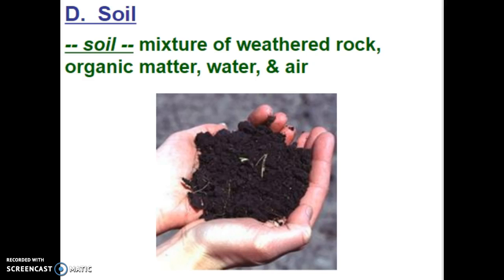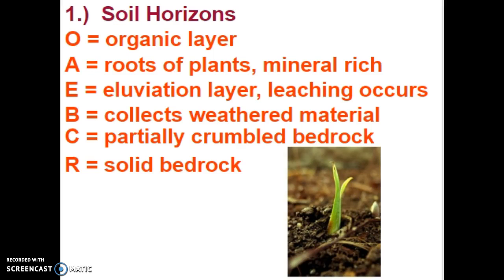Basically, we have mechanical and chemical weathering so we can have soil. Soil is a mixture of weathered rock, organic matter, water, and air. We can take a look at the different soil horizons. These layers can be any certain thickness depending on a lot of different things for the area itself, but we'll start from the top all the way down.